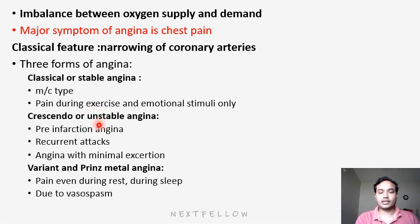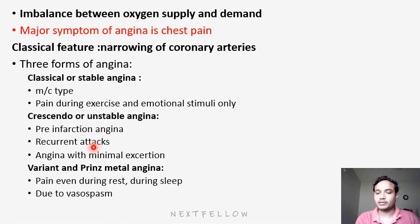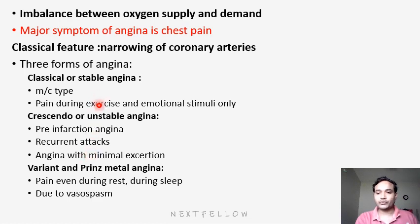Crescendo unstable angina is also known as pre-infarct angina. In unstable angina, the patient will have recurrent attacks — multiple episodes of chest pain. Next, angina occurs with minimal exertion. Previously the patient could do activity for five minutes before having pain, but now even a little walk will develop pain. That is unstable angina. Stable angina means pain with physical activity; unstable means pain even with minimal activity. It is also known as pre-infarct angina.